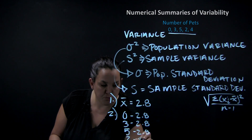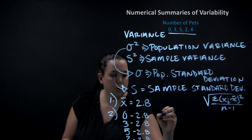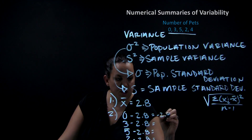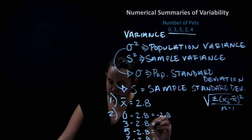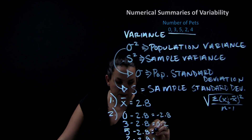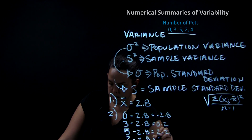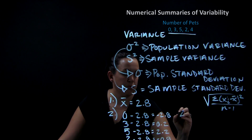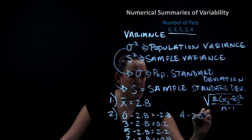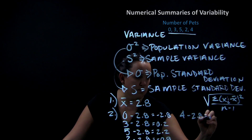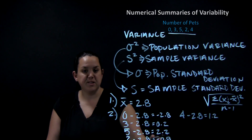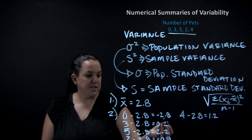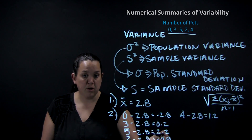Continuing the deviations: 2 minus 2.8 gives negative 0.8, and we have one more — giving us negative 2.8, 0.2, 2.2, negative 0.8. The problem with these distances is that because they include direction, they would cancel out if we averaged them.